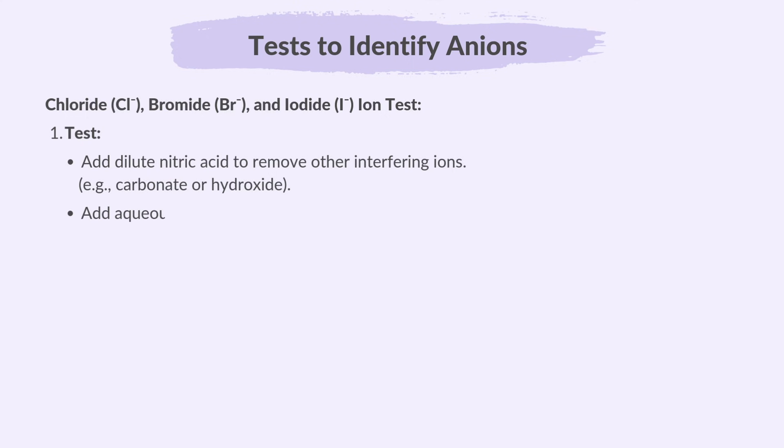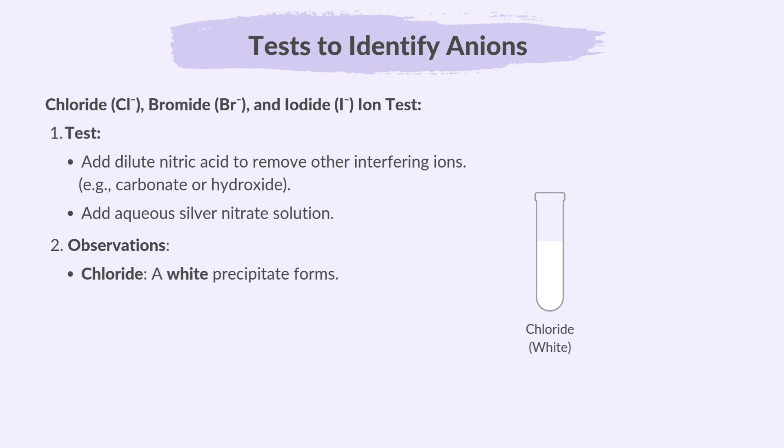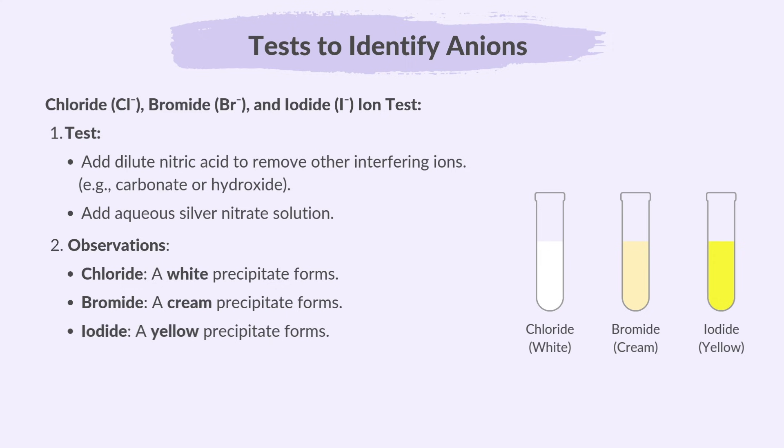Add aqueous silver nitrate solution. For chloride, a white precipitate forms; for bromide, a cream precipitate forms; and for iodide, a yellow precipitate forms.